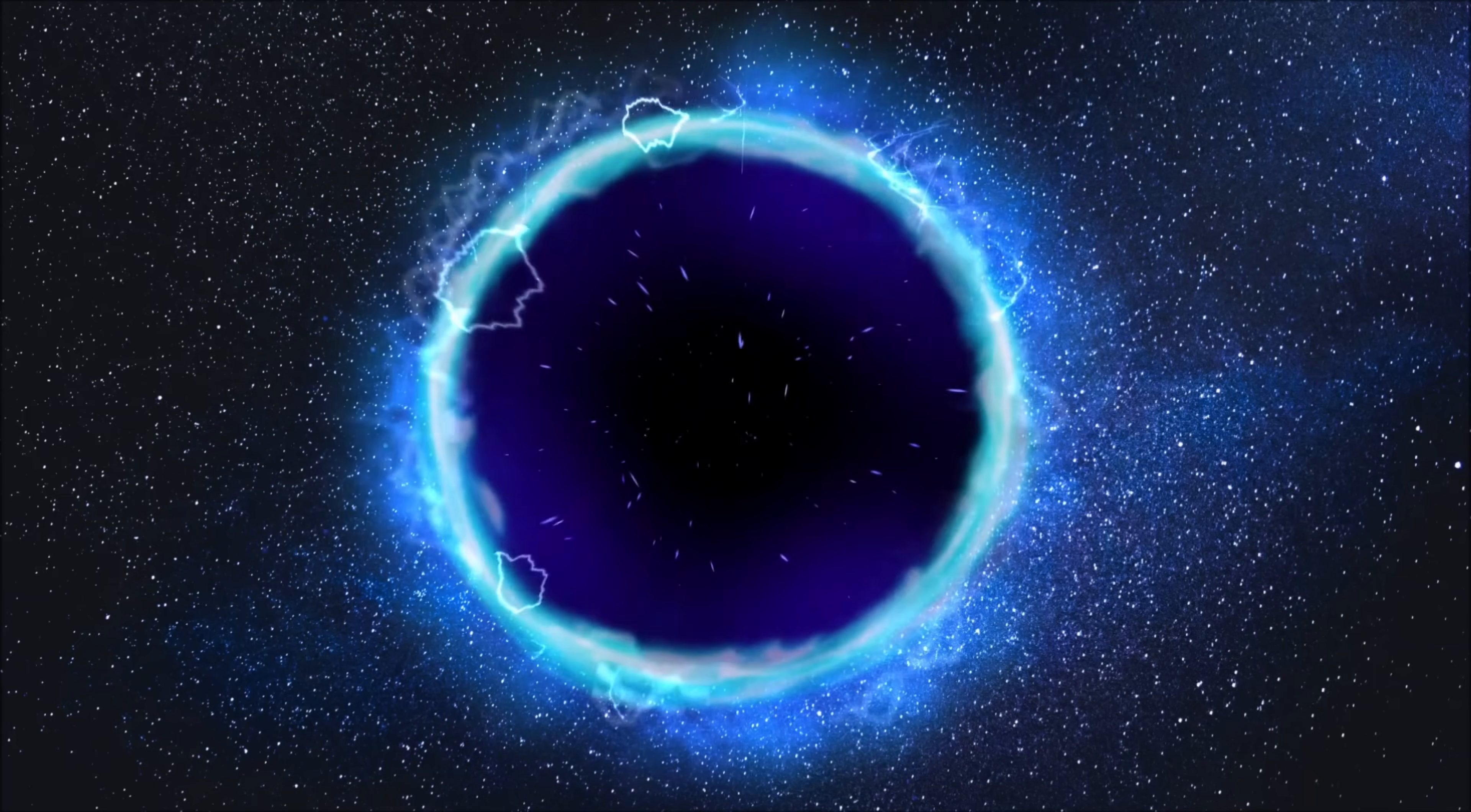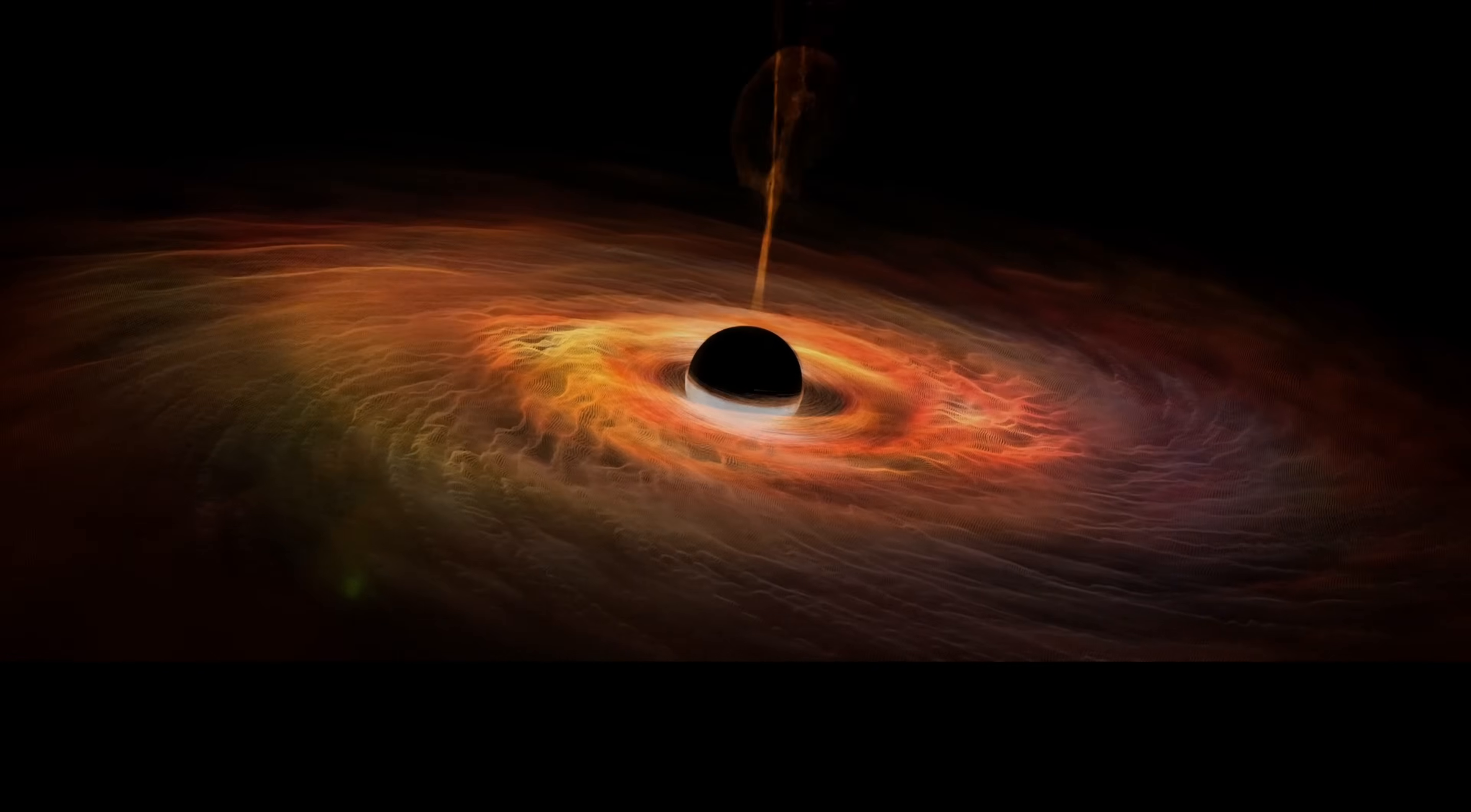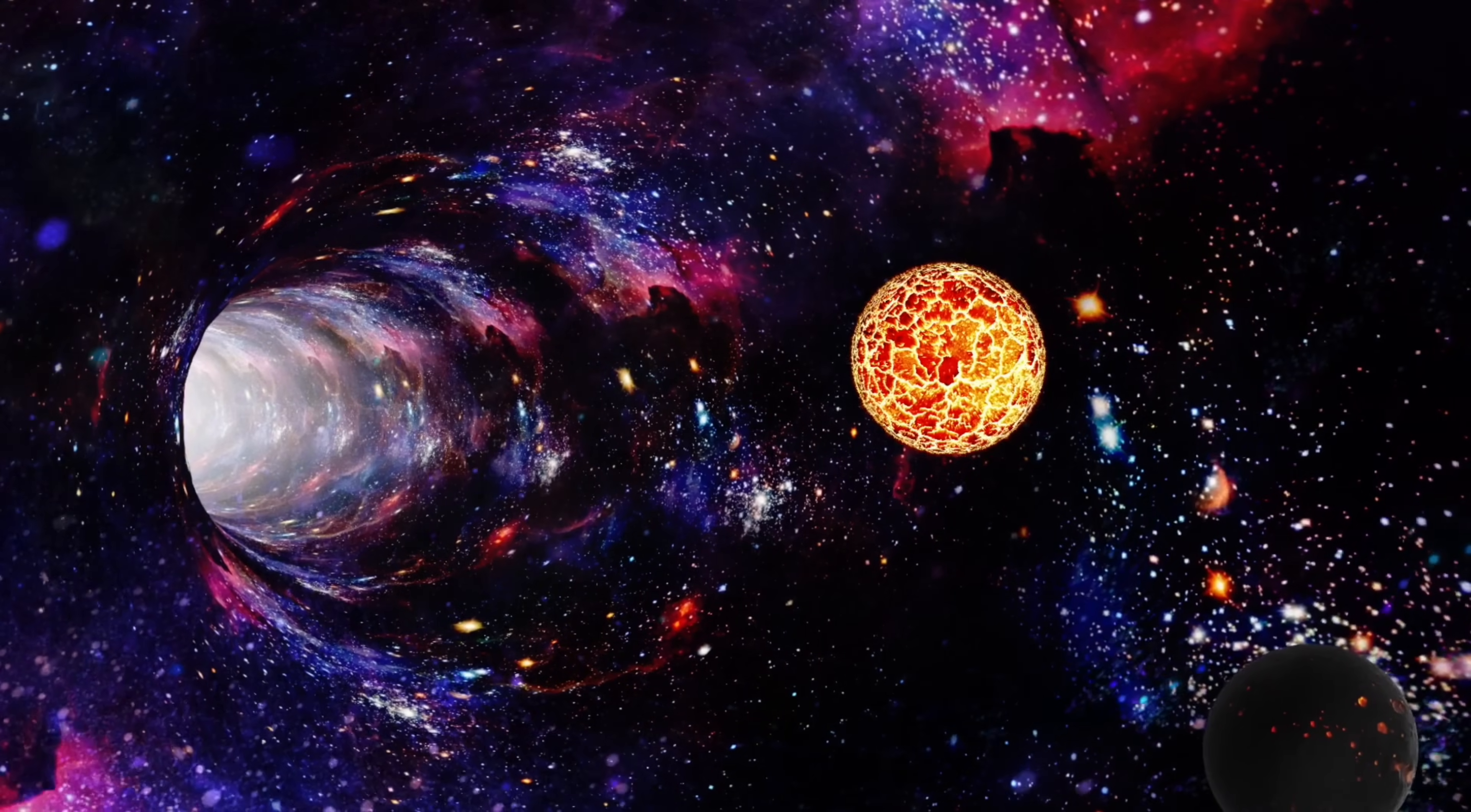The most massive cluster in this region is the Norma supercluster. Recent studies have revealed that the Norma Wall extends beyond the original boundaries, stretching into the constellations of Centaurus and Vela. This suggests that the Great Attractor is a more complex structure than previously thought, with a larger network of galaxies and clusters contributing to its gravitational influence.